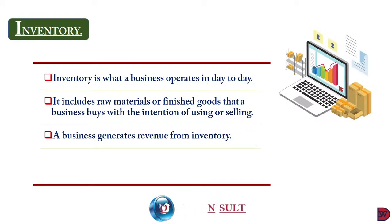If they sell any other item, it will be recorded as additional or other income. For example, a school is set up to provide educational services. So the fees they collect and the sale of stationery and school materials — that will be their revenue. But if they sell their school bus, it will be recorded as other income.